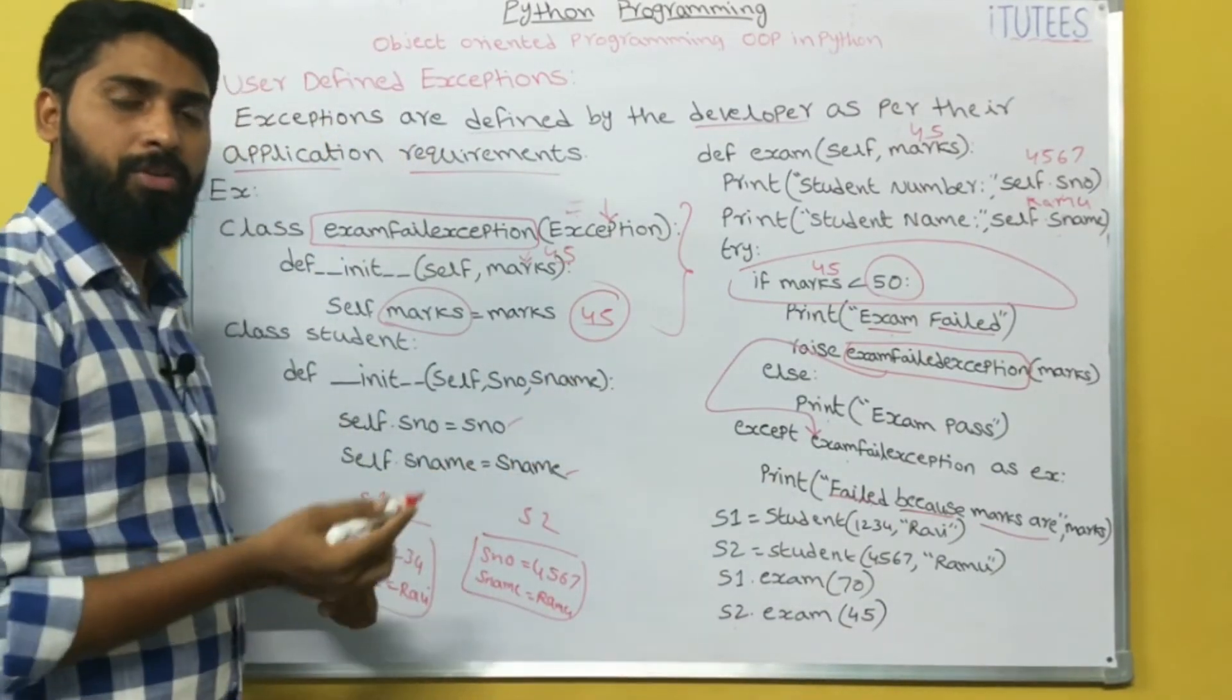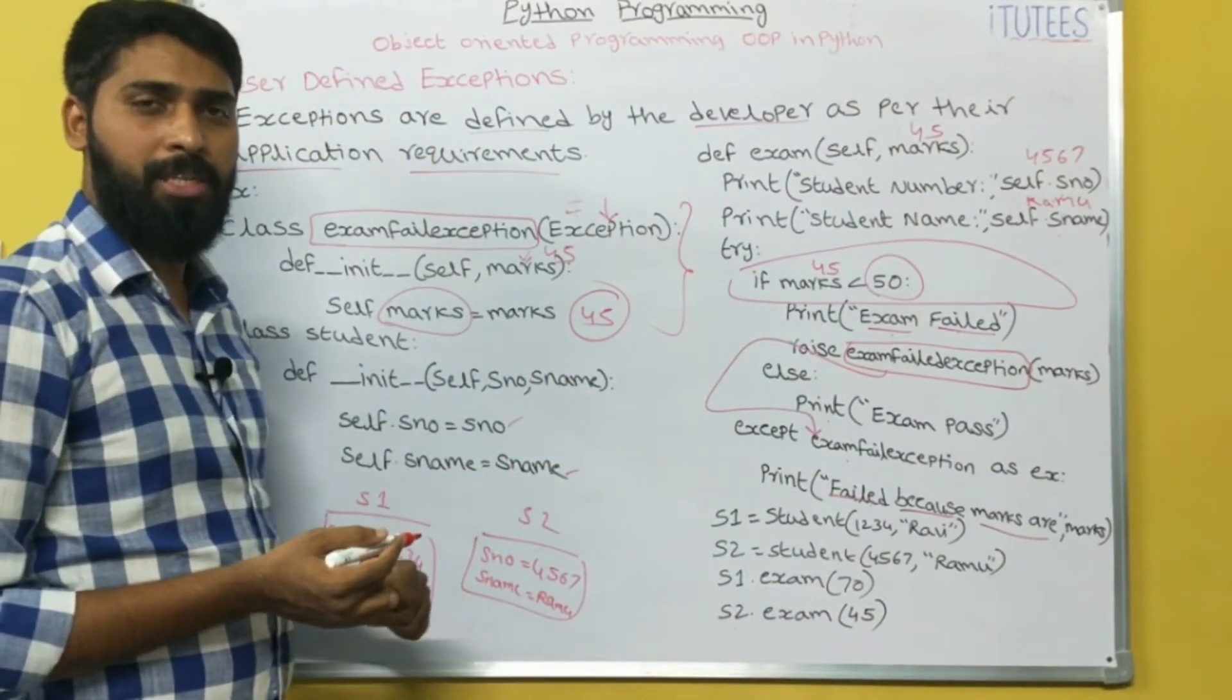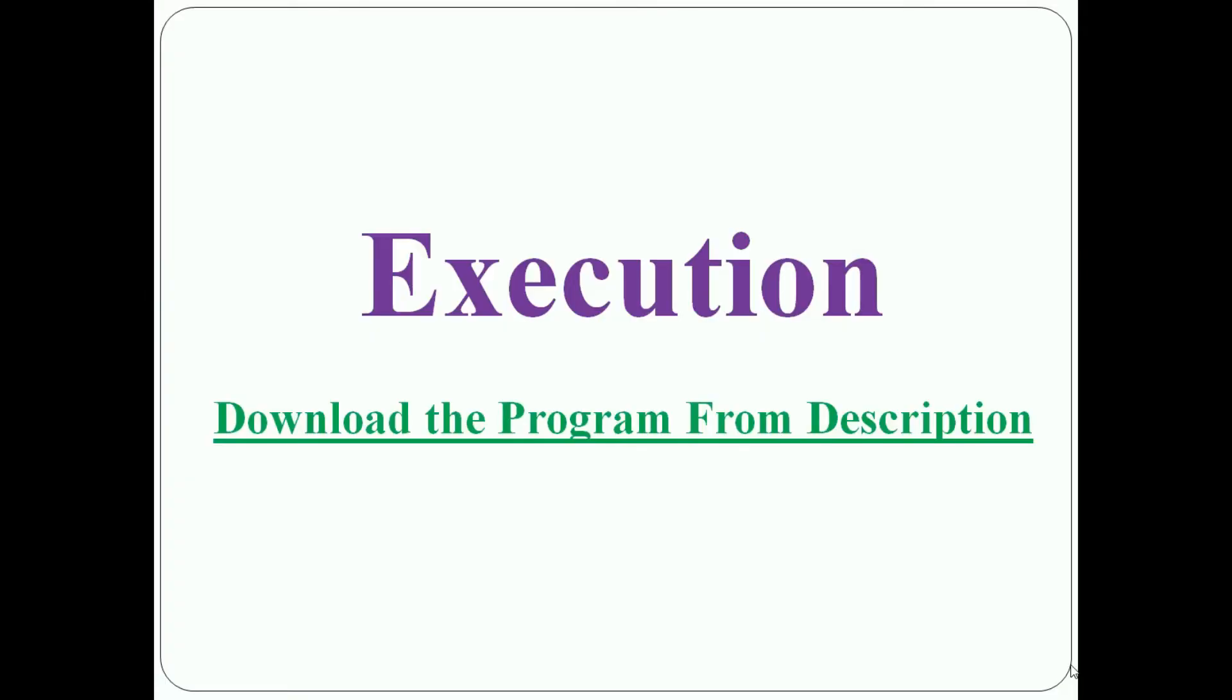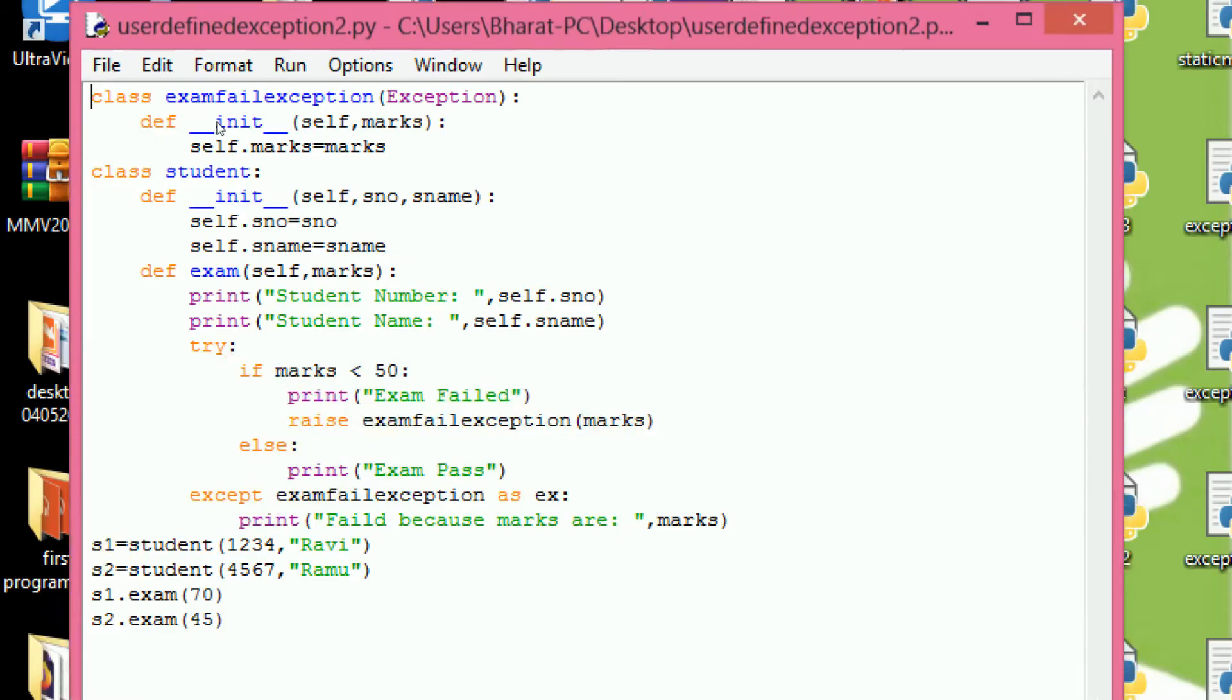In this way you can define the user defined exceptions in Python. Now we see user defined exception. Here the user defined exception is exam fail exception. I inherit the exception class as base class. Now we are going to execute this program.